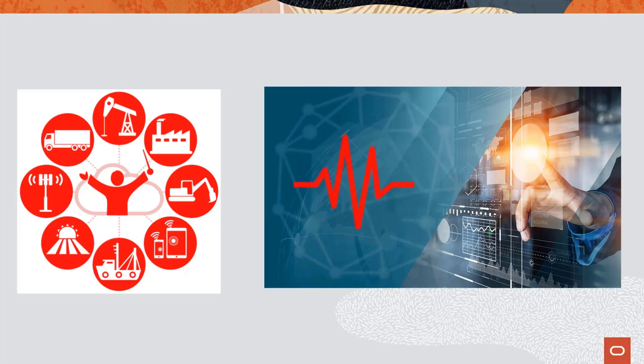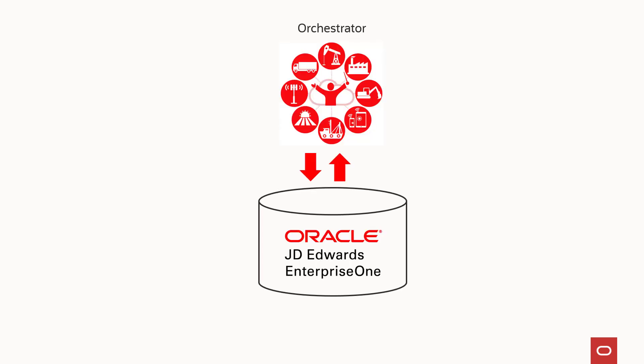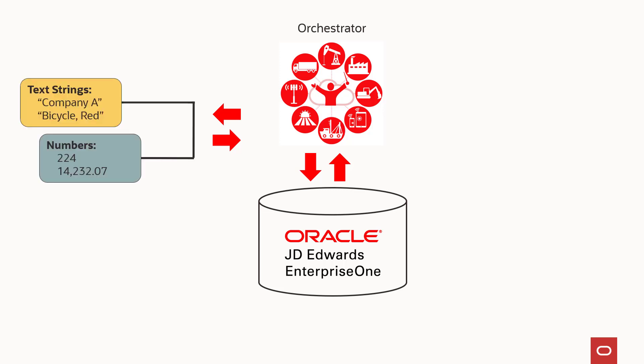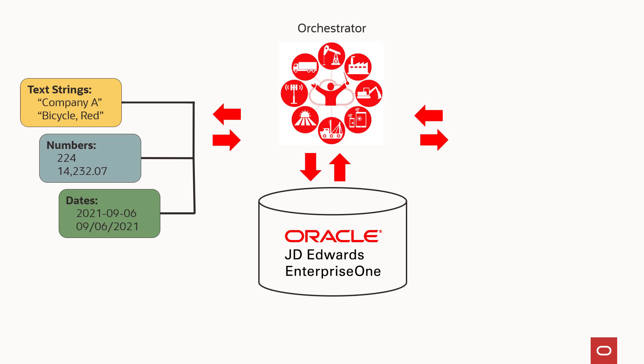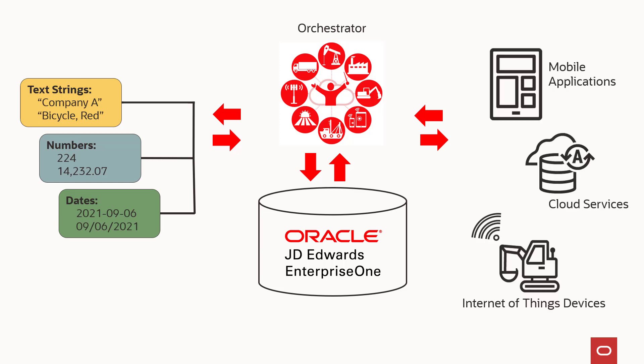Much of the information we need to manage and store in our JD Edwards system comes in the form of structured data — in other words, data that can be defined as a text string, a number, or a date. And we know that Orchestrator can help us store that data in JD Edwards and share it with mobile devices, cloud services, and IoT devices.